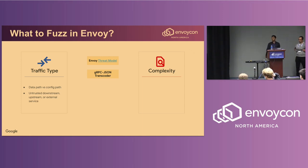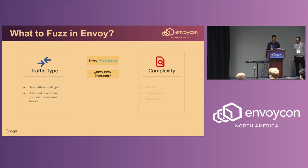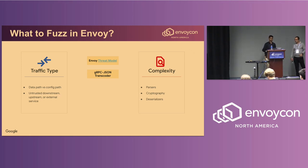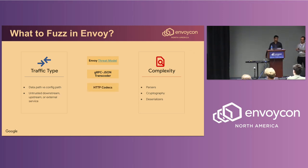Going back to prioritization, the other attribute is complexity. We want to fuzz code that's intricate such as parsers, cryptography, deserializers, and any code that has historically been the source of security bugs. Good examples of this are HTTP codecs and route matching.